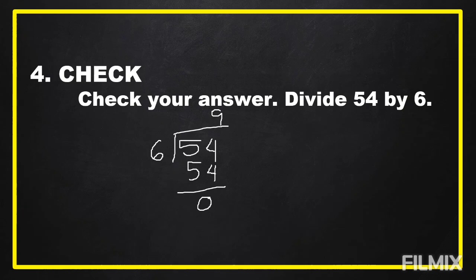This is the way we solve word problems. First, we understand the problem — we identify what is asked and the given facts. Then we plan, knowing what strategy or operations to use. After that, we carry out the plan and solve the problem. Finally, we check whether our answer is correct or not.